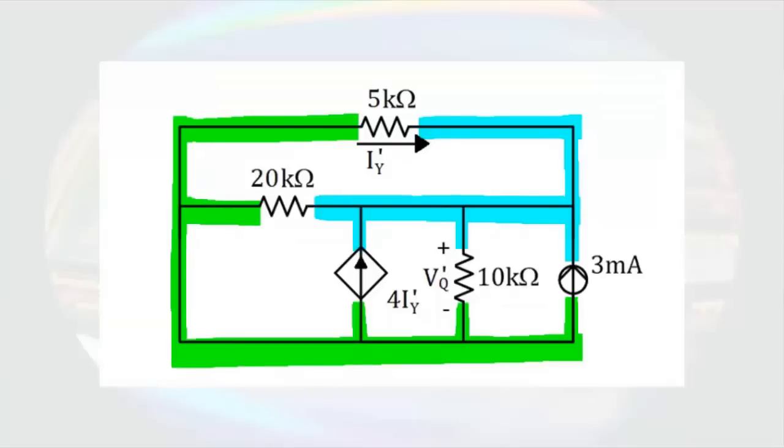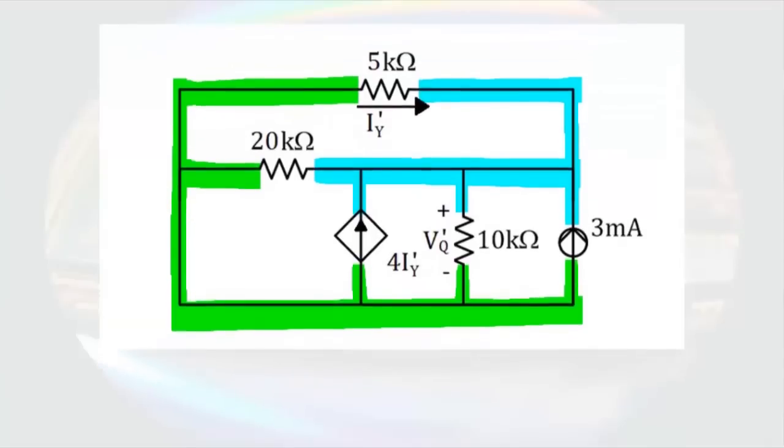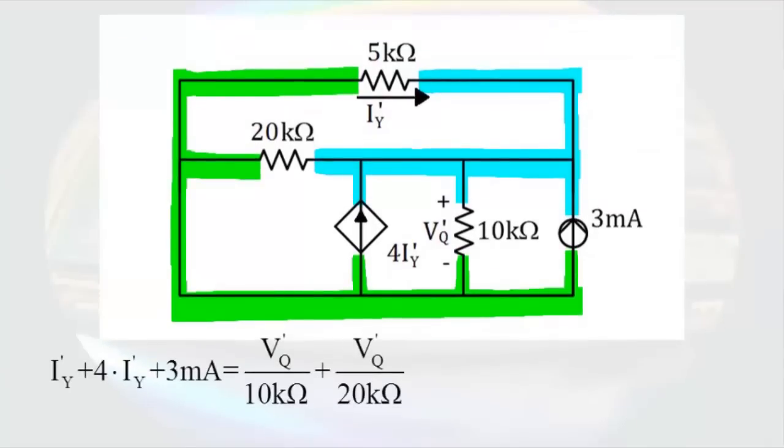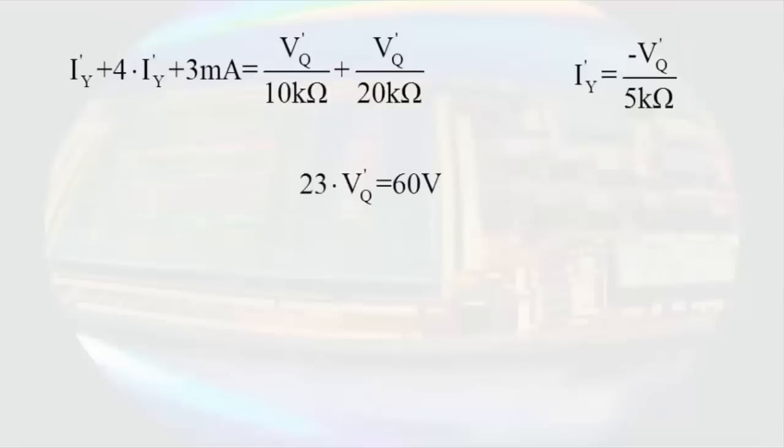We can then write a KCL equation at the node highlighted in blue. If we set the currents entering the node equal to the currents leaving the node, we get IY prime plus 4IY prime plus 3 milliamps equals VQ prime over 10 kilo ohms plus VQ prime over 20 kilo ohms. A second equation can be found by relating the controlling parameter to VQ prime. That results in IY prime equals negative VQ prime over 5 kilo ohms. A little bit of algebra will get us to 23VQ prime equals 60 volts, so VQ prime equals 2.61 volts.